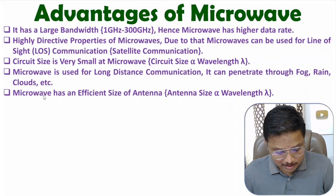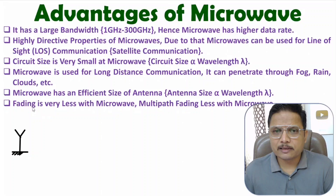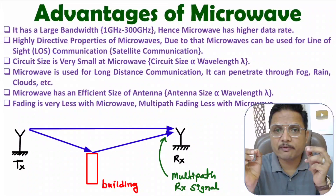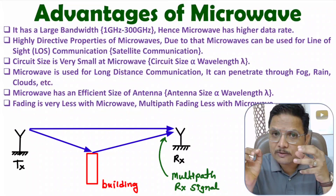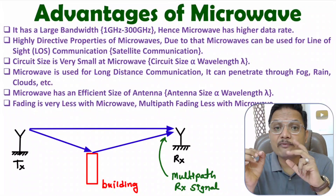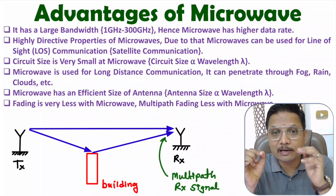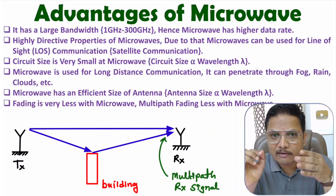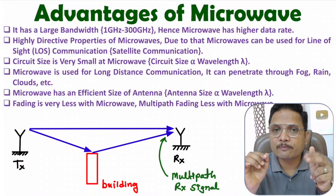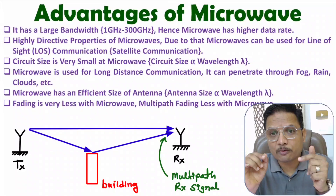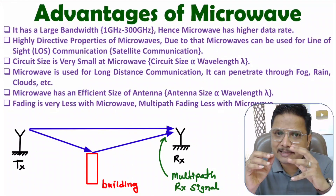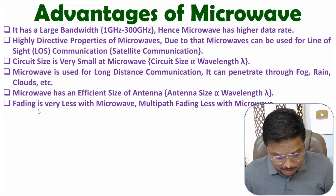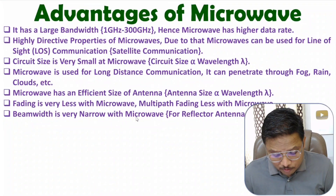The next advantage is based on fading. Fading means that when we transmit a signal from transmitter to receiver, the receiver picks up signals from multiple paths, which causes phase issues because the path lengths differ. With microwave, we have very less fading — meaning multipath reflection is less, and scattering of signals from walls and other objects is also less. That's why microwave has very few issues with multipath fading.